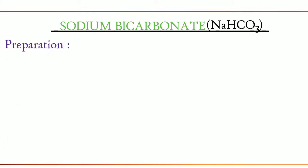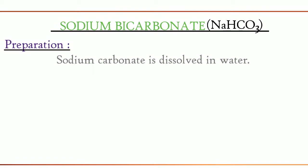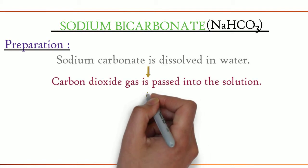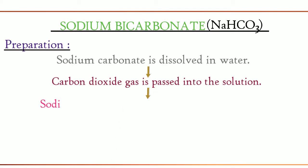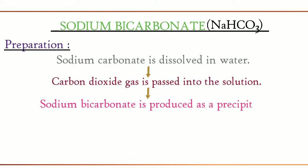To prepare sodium bicarbonate, sodium carbonate is dissolved in water, and then carbon dioxide gas is passed into the solution. As a result, sodium bicarbonate is produced as a precipitate. It is washed and dried to get the required product.